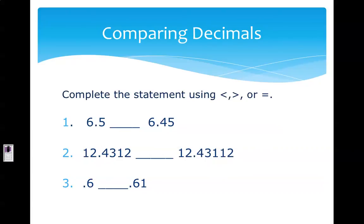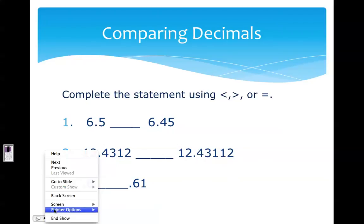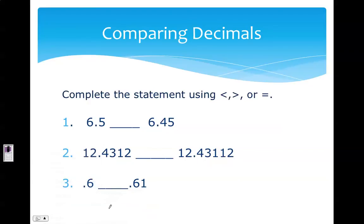The next thing we're going to talk about is comparing decimals. It's similar to ordering, but this time we're telling whether one number is less than, greater than, or equal to another. I'm going to look at the first one: 6.5 compared to 6.45. They both have six as a whole number, so I look at the tenths place — this one has a five and this one has a four. Five is greater than four, so six and five tenths is greater than six and forty-five hundredths.